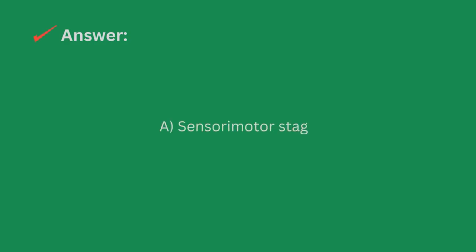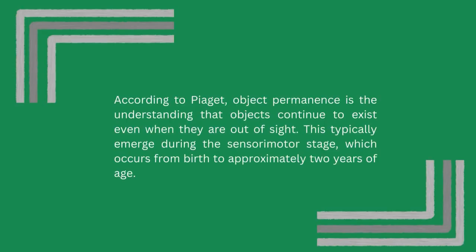The answer is letter A, sensorimotor stage. According to Piaget, object permanence is the understanding that objects continue to exist even when they are out of sight. This typically emerges during the sensorimotor stage, which occurs from birth to approximately two years of age.